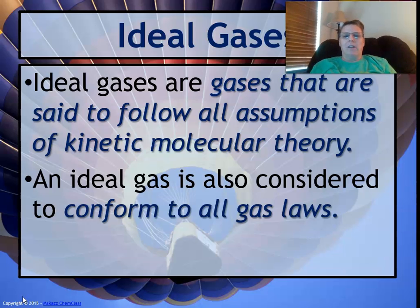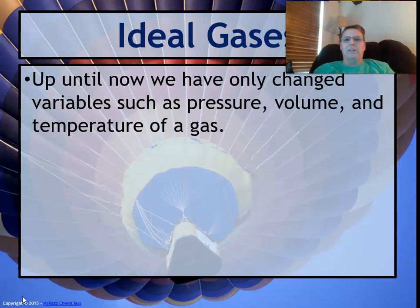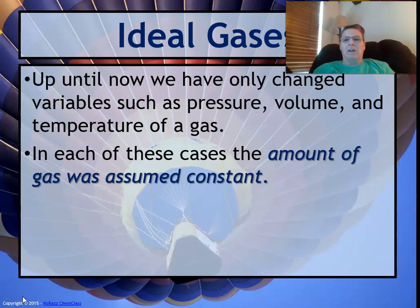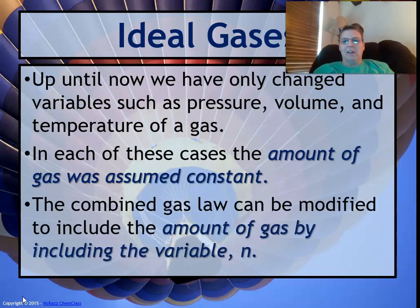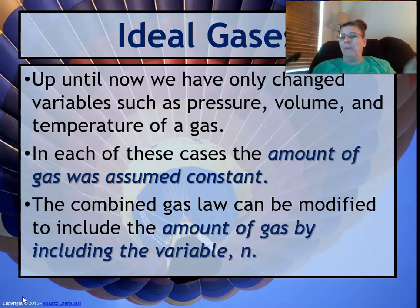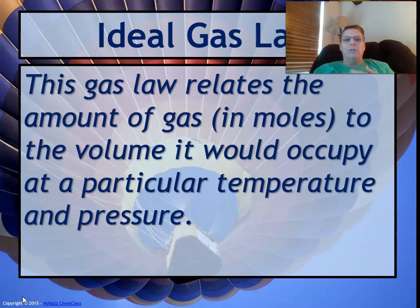An ideal gas is also considered to conform to all gas laws. Up until now we've only changed variables such as pressure, volume, temperature, and even some moles because we did Avogadro's. In this case, we're also going to change the amount of gas. The combined gas law can be modified to include the amount of gas by including a variable we've already talked about — that's Avogadro's number.